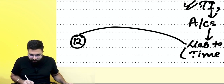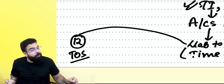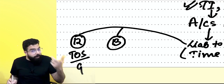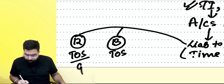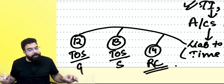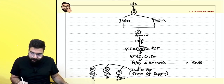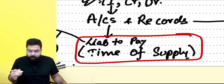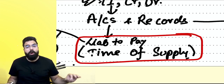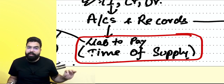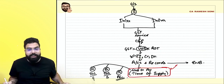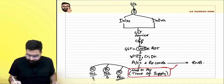Section number 12 talks about time of supply — when do you become liable in case of supply of goods. Section number 13 says when do you become liable in case of services. Section number 14 deals with rate change — whenever there is a change in the rate of tax, what will be the time of supply and applicable rate.